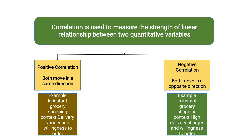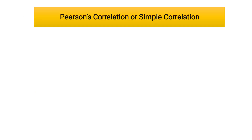Now let's understand negative correlation with an example, again in the instant grocery shopping context. Consider high delivery charges and willingness to order. If delivery charges increase, there is a high chance that willingness to order will decrease — so that might be a negative correlation.